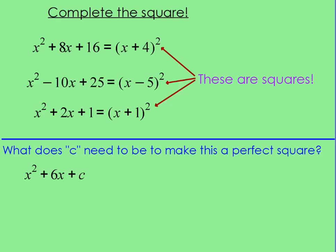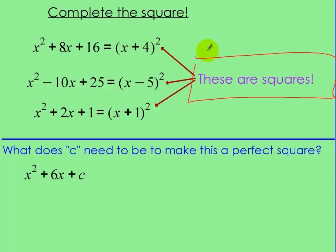So, before we do completing the square, let's actually explain what that means. We've got these quadratic expressions here: x squared plus 6x plus 8 equals x plus 4 squared when factored. Same thing — x squared minus 10x plus 25 factors to x minus 5 squared, and x squared plus 2x plus 1 factors to x plus 1 squared. When they can be factored to some binomial squared, these are called perfect squares.